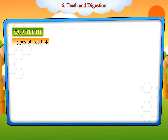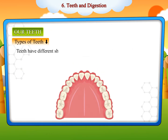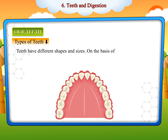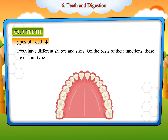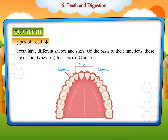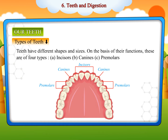Teeth have different shapes and sizes. On the basis of their functions, they are of four types: incisors, canines, premolars, and molars.